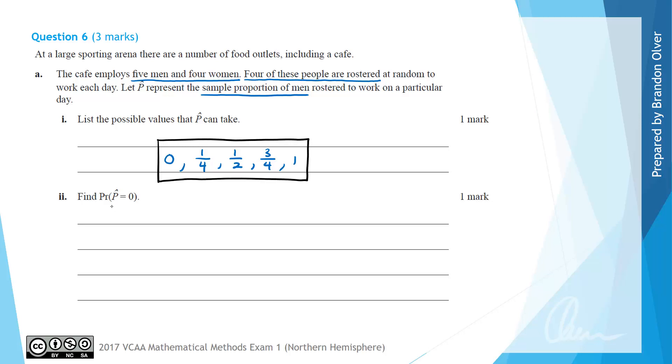For part two, we're asked to find the probability that P-hat equals zero. The proportion of men working out of four is zero, which means all four are women working at that cafe at that time. To answer this, we look at a particular set of branches of a tree diagram where we have a woman working, a second woman working on that shift, a third woman and a fourth woman all working on that shift.